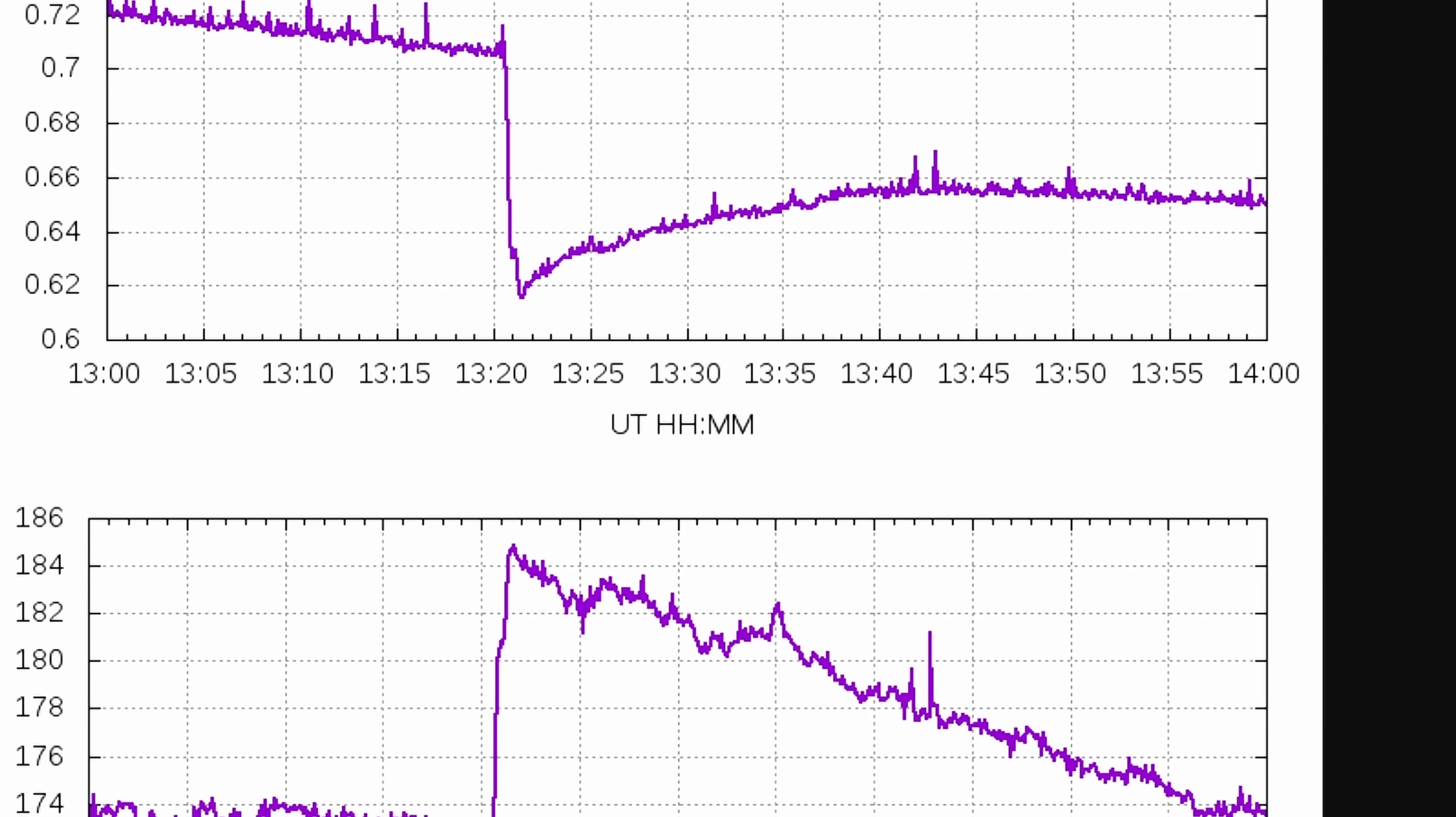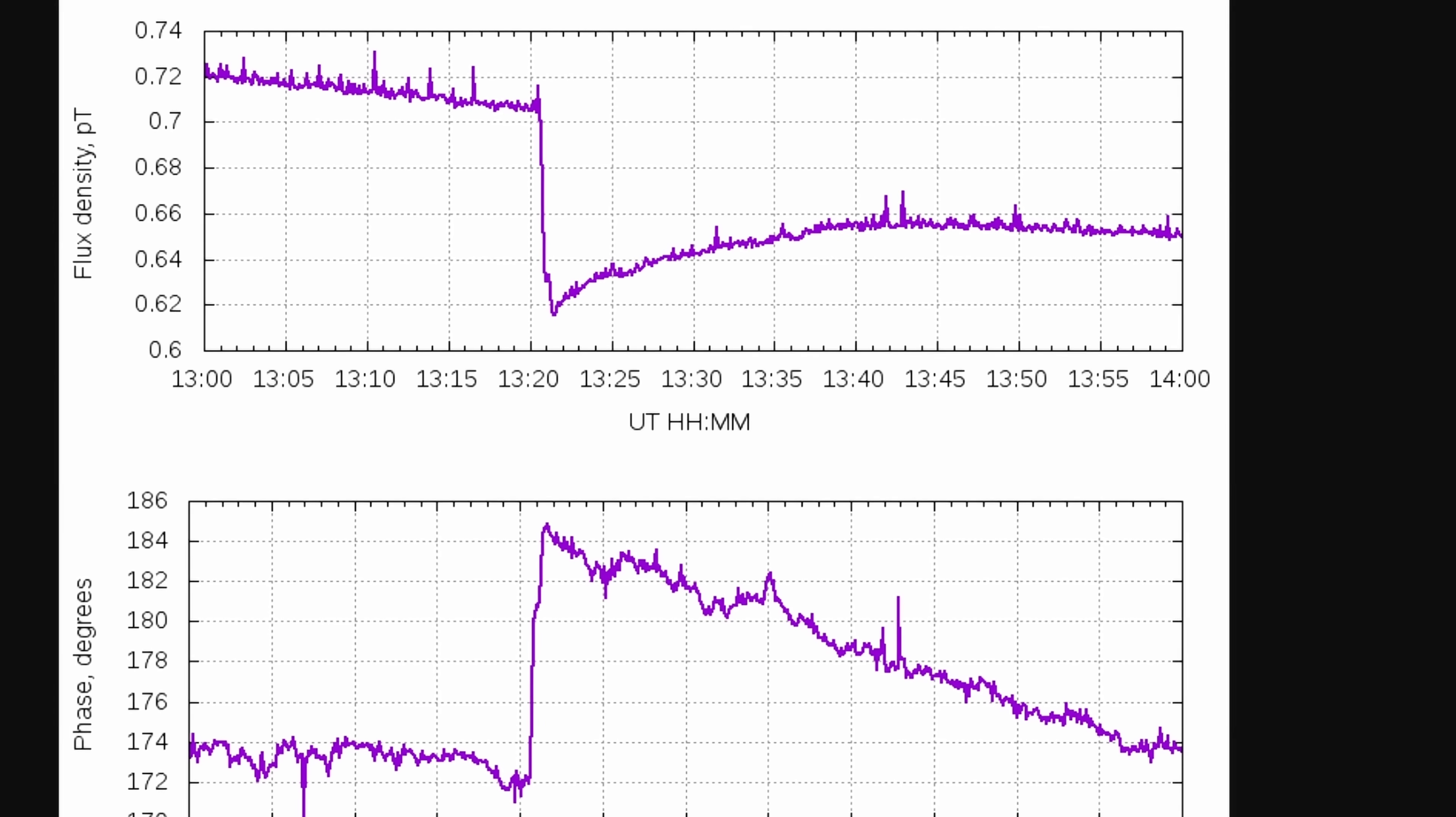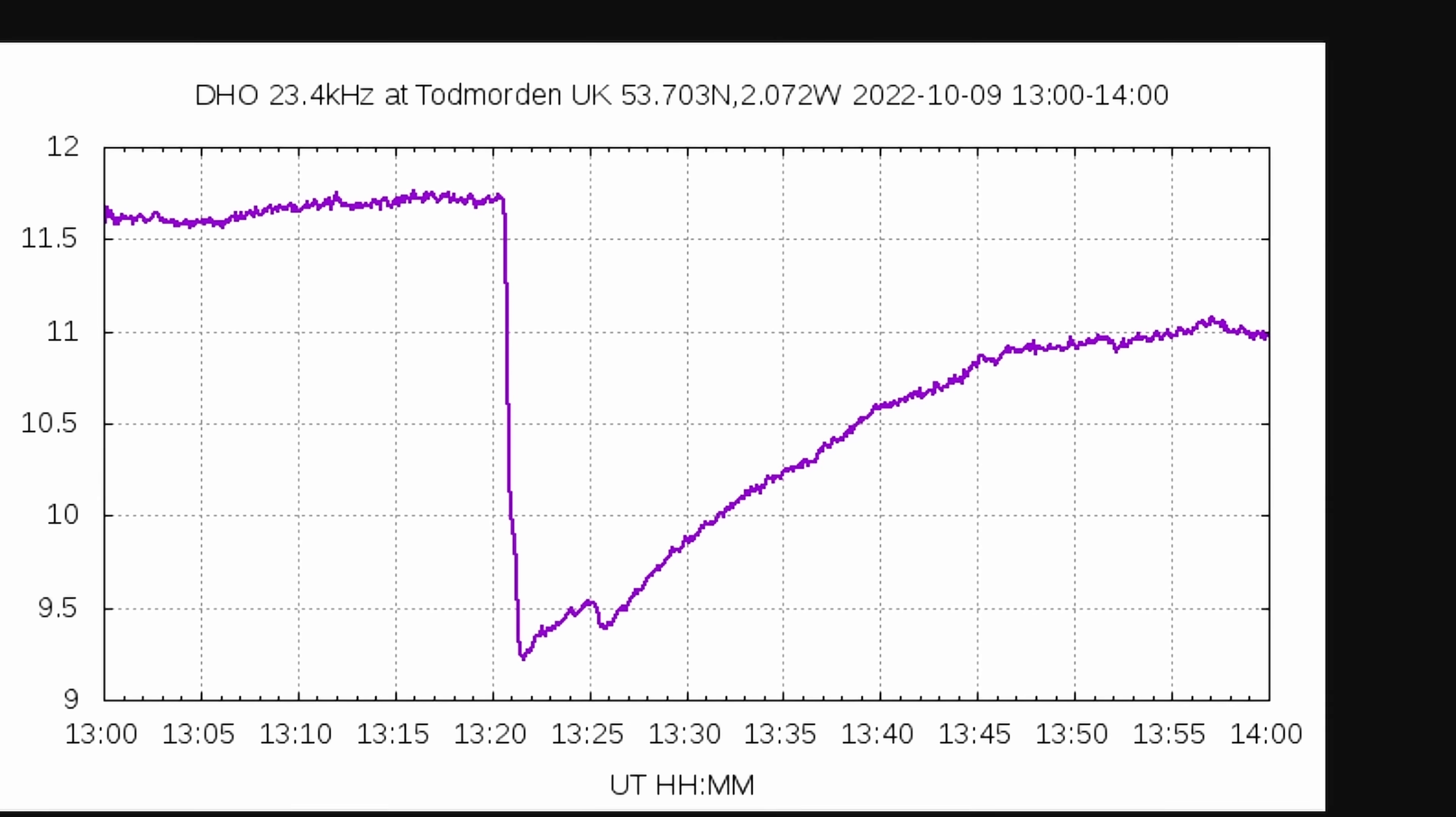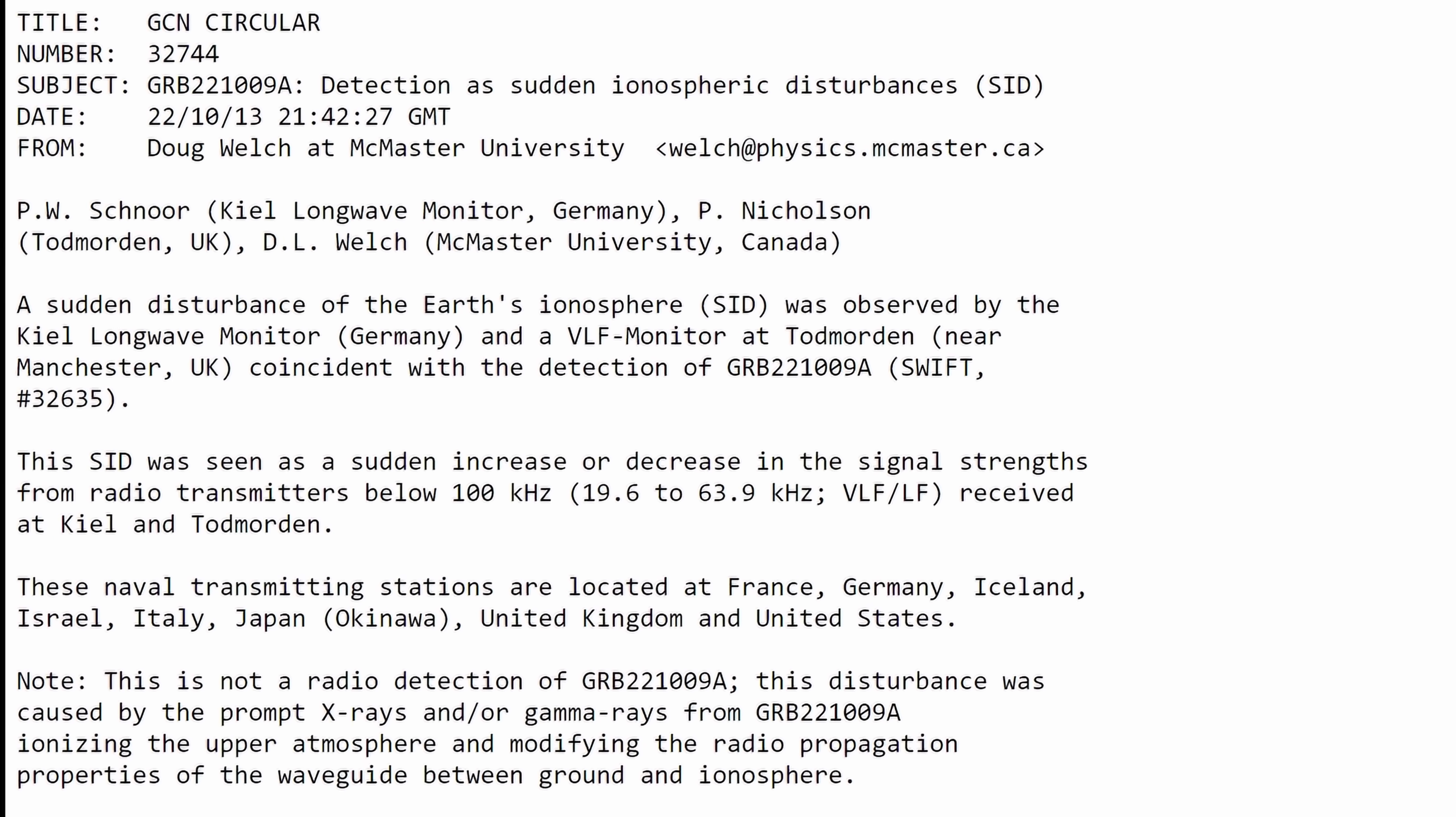Then there was this. These are the observations of the ionosphere from Europe showing us something unusual happened at this particular time. Something quite powerful. Something that actually even affected the radio communication on the planet during this period of time because of these dramatic effects. You can read about this detection and the announcement from the bulletin message that was sent out on October 13th by a Canadian researcher.